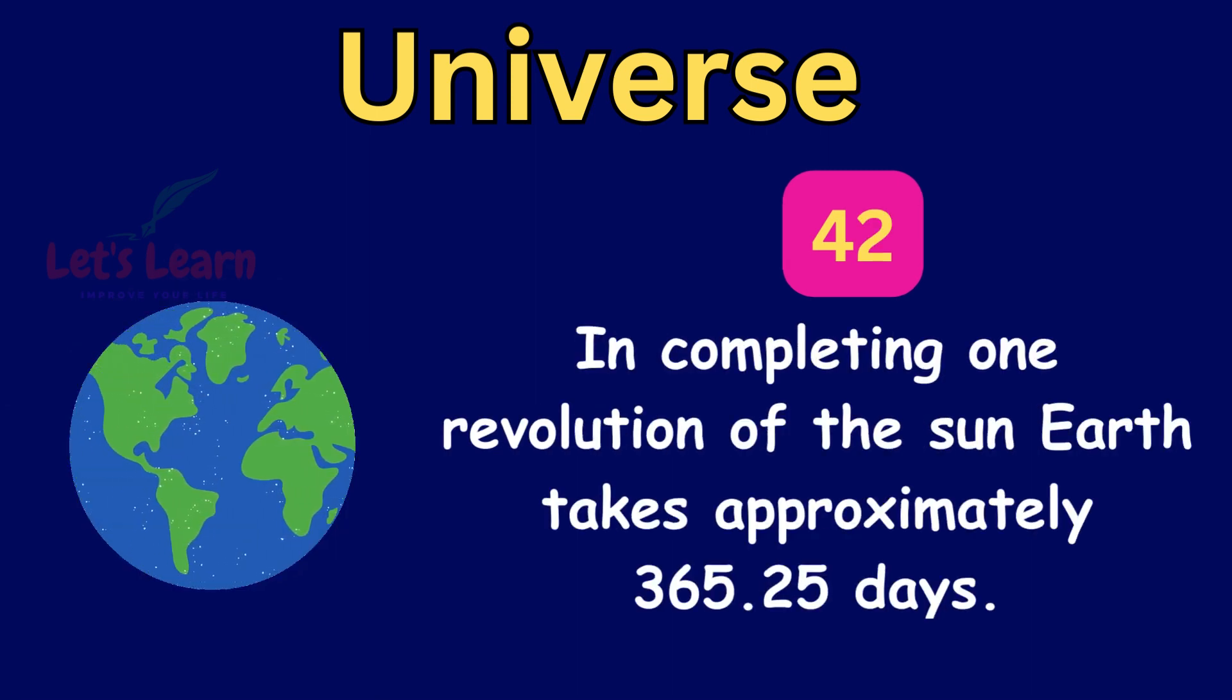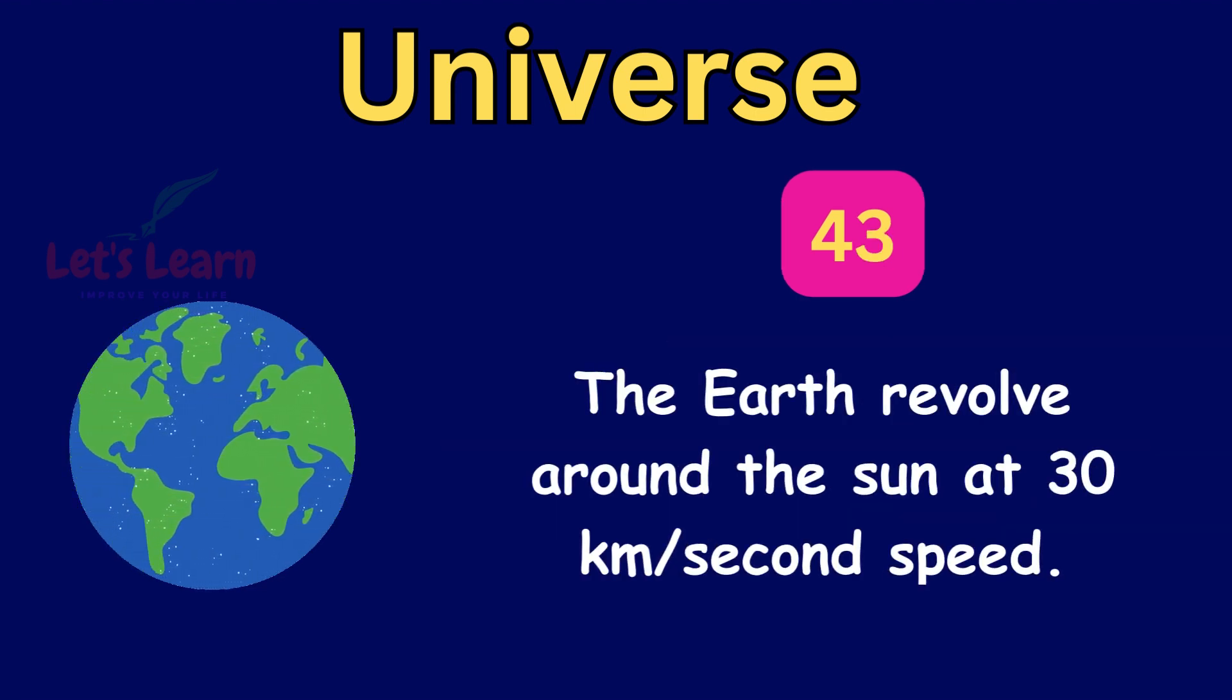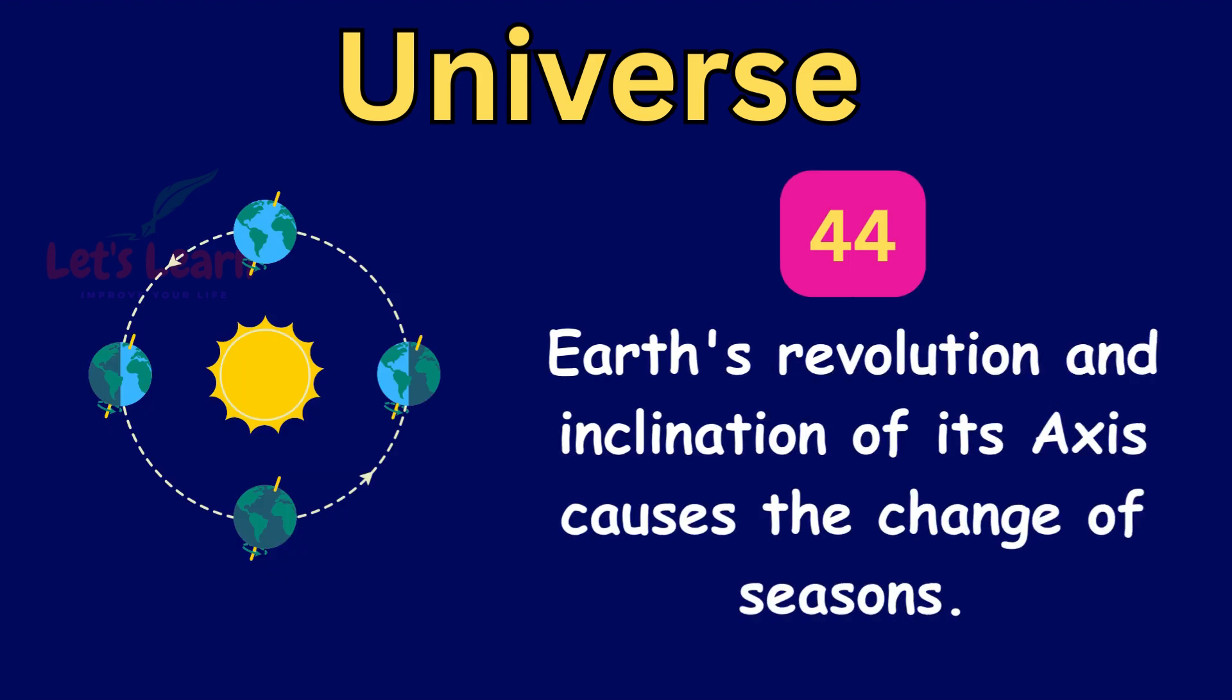In completing one revolution of the Sun, Earth takes approximately 365.25 days. The Earth revolves around the Sun at 30 km per second speed. Earth's revolution and inclination of its axis causes the change of seasons.